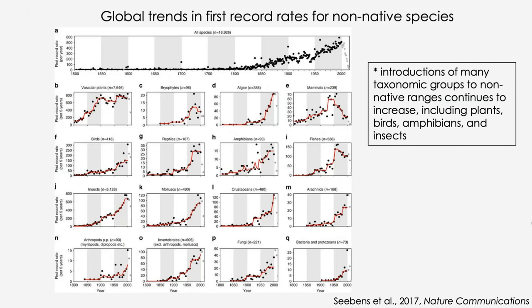Those non-native species that are invasive can cause major impacts on biodiversity and ecosystem functions. There's no indication that the rate of introduction of species is slowing down — for many taxonomic groups including plants, birds, amphibians, and insects, the first record of non-native species in a new range continues to increase.